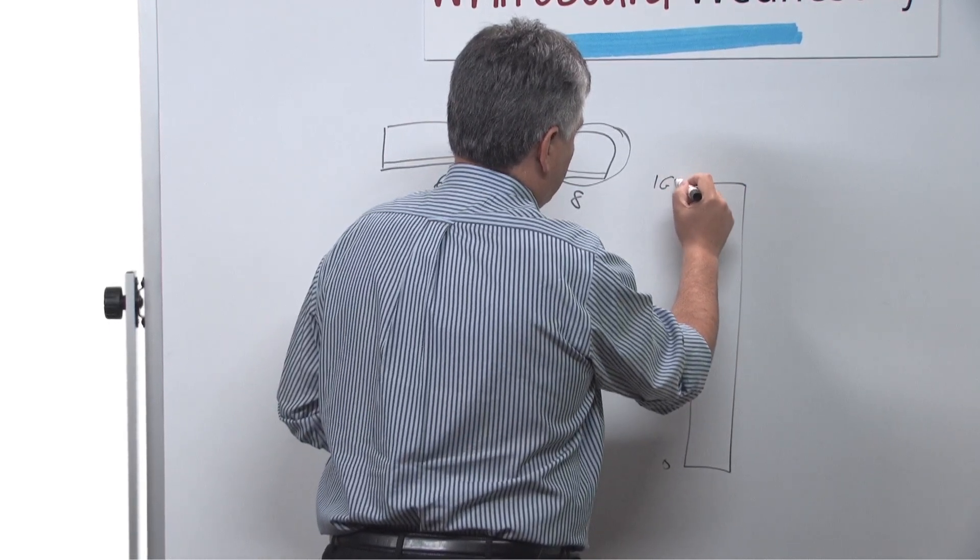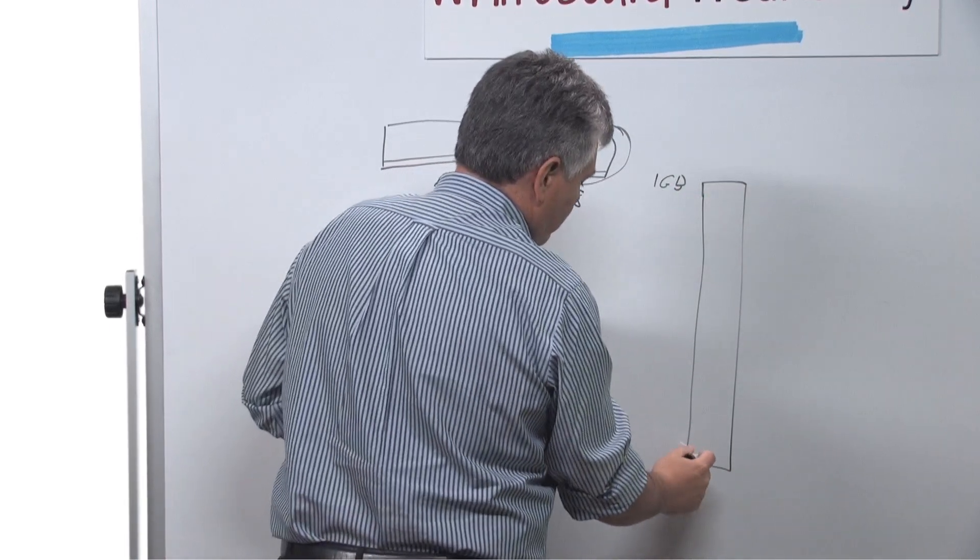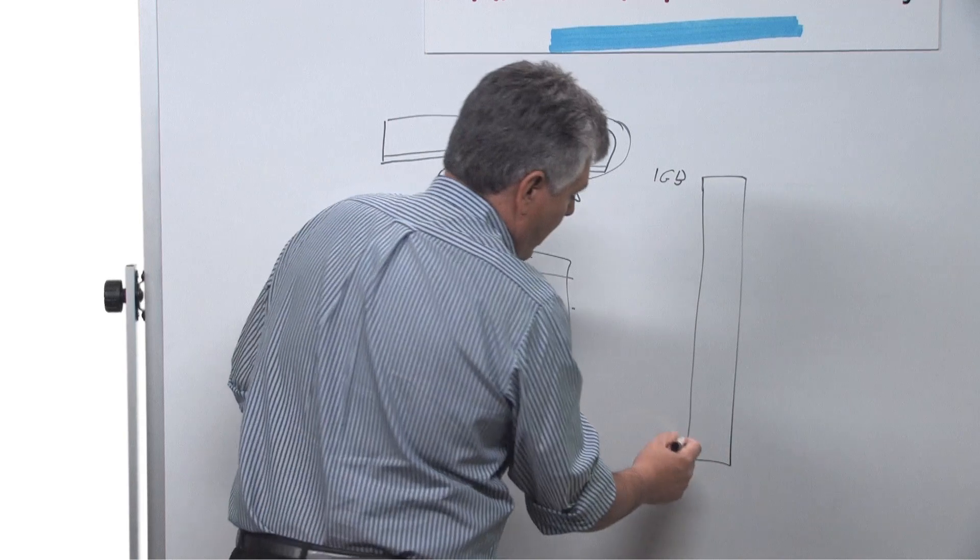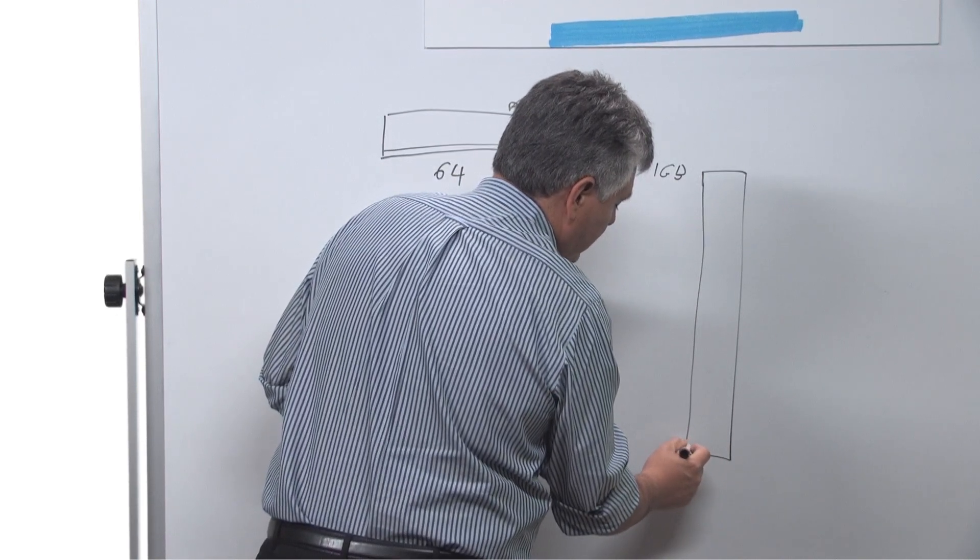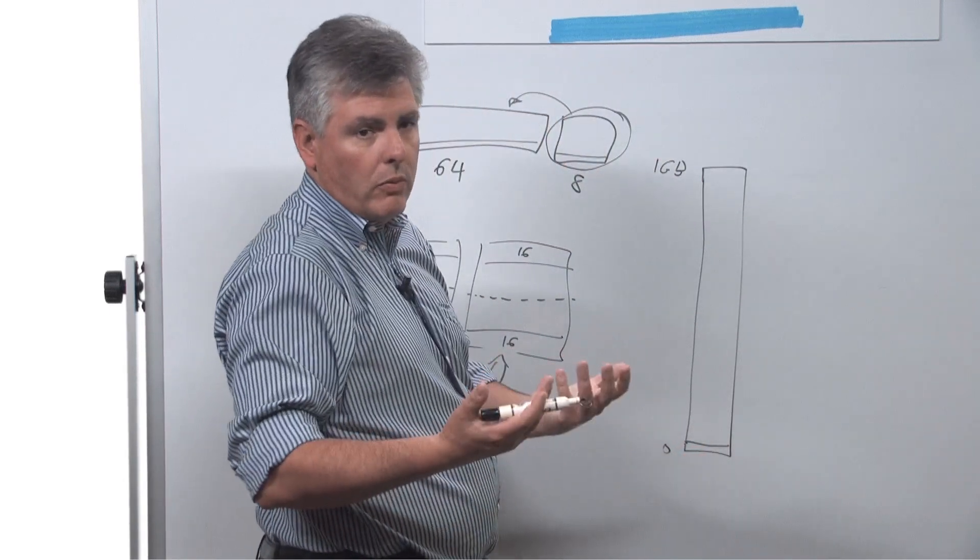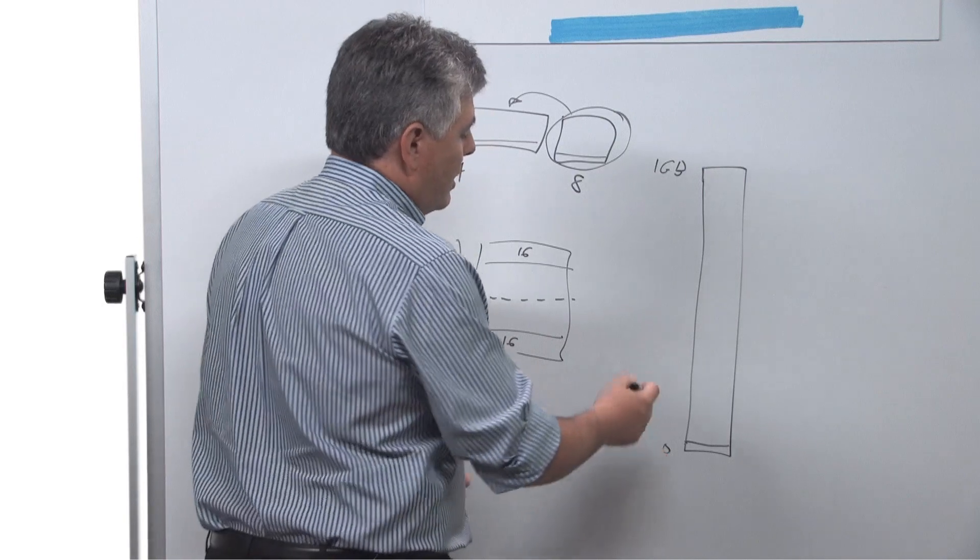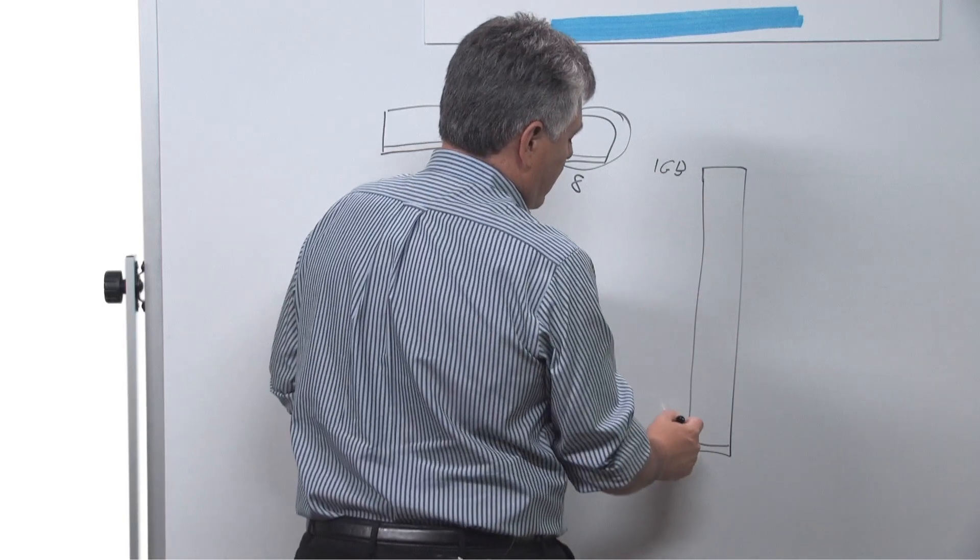Then what I would do is I would most likely write the data that I need to do here. When I've reached either the end of that transaction or when I've reached a certain threshold, then what I'll start doing is writing the ECC data after it.